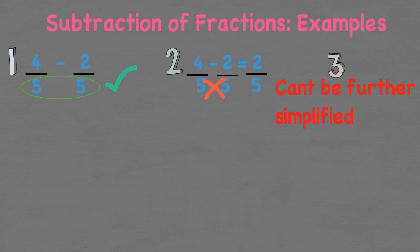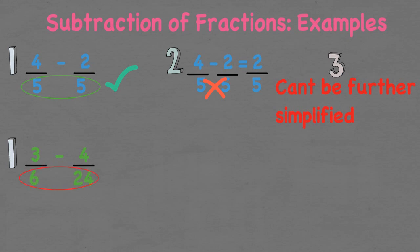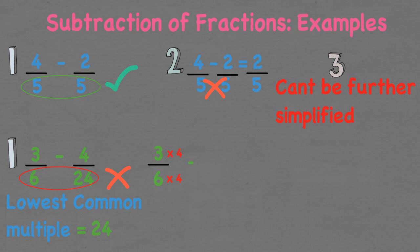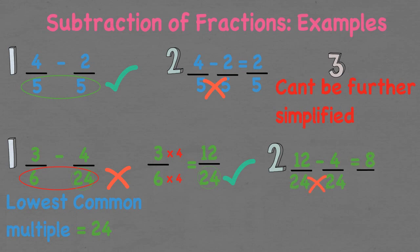For a more complex subtraction problem, we have three over six take four over 24. The denominators aren't the same so the fraction isn't alike. We need to find the lowest common multiple for both 6 and 24 — in this case it is 24. To get the denominators the same, we multiply 6 by 4, and whatever we do to the denominator we must do to the numerator, leaving us with 12 over 24. Now that the fractions are alike, we subtract and are left with 8 over 24. Dividing both by 8 gives us one over three, which is our final answer.